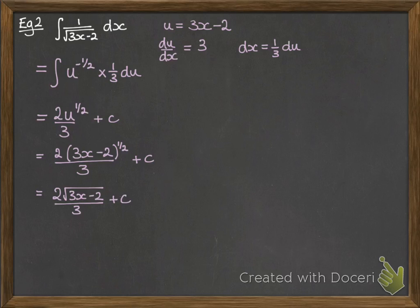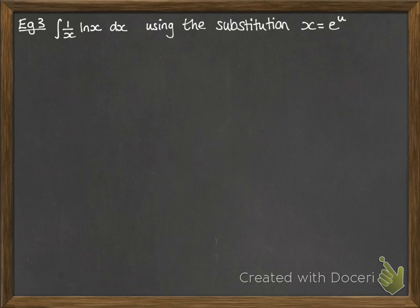Now we can rewrite this to be in the same form that the question was in. So that 3x minus 2 to the half we can write as a square root instead. But that last step isn't strictly necessary. Okay, example number 3.